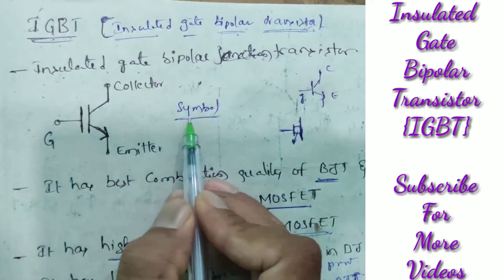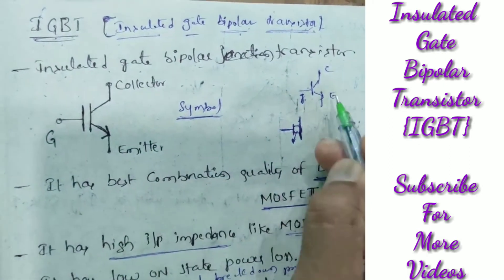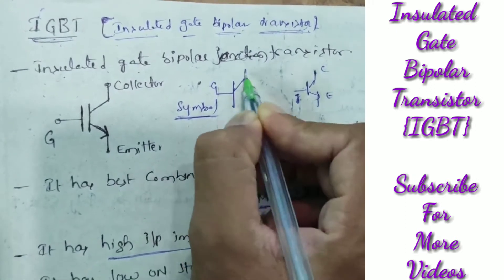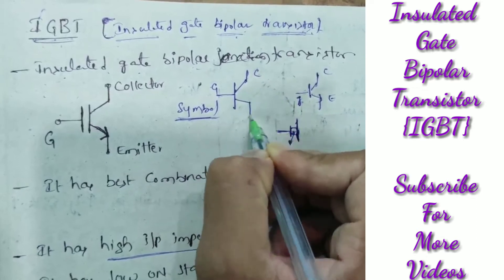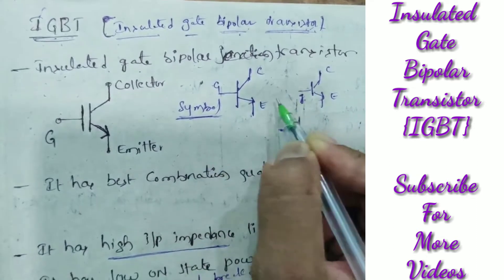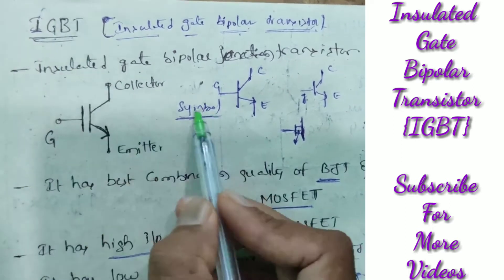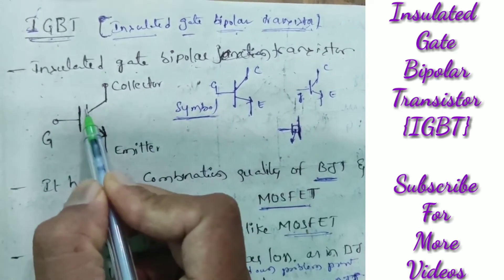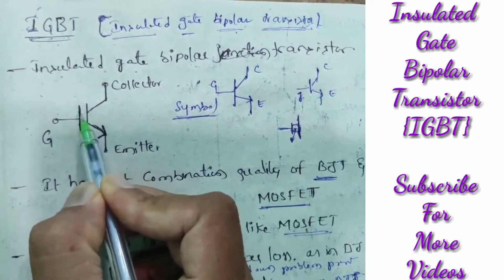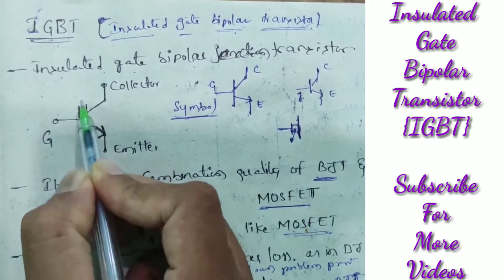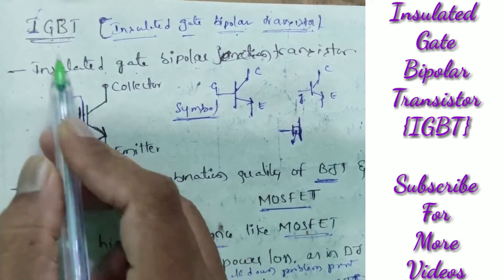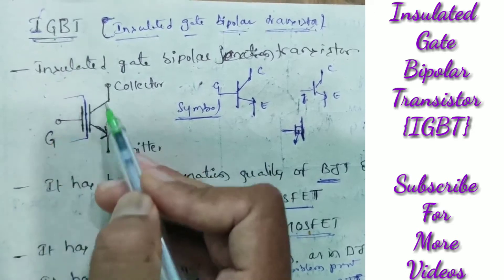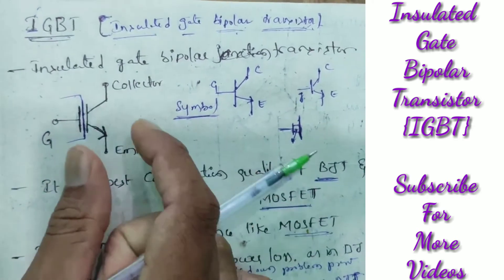Let's see the symbol. The transistor symbol is like this. This is gate, this is collector, and this is emitter. Coming to the IGBT, the gate is insulated. Here you can observe this gate is insulated — here is the insulator, this is the insulation. That is why it is called IGBT — insulated gate bipolar transistor. This is about the symbol.